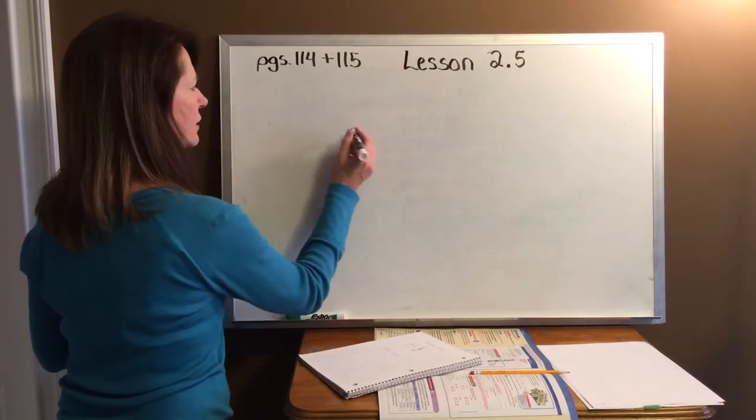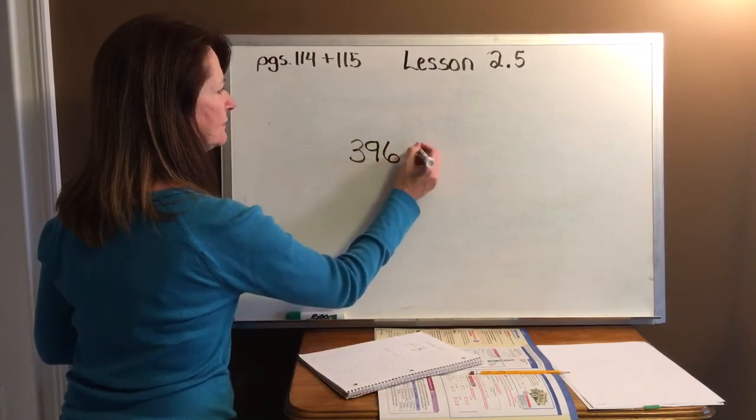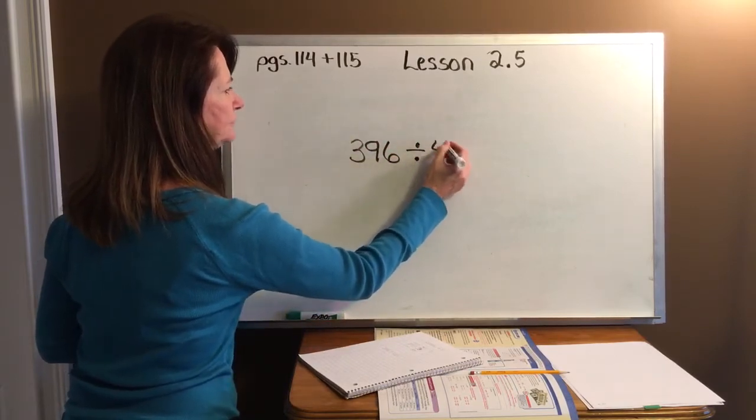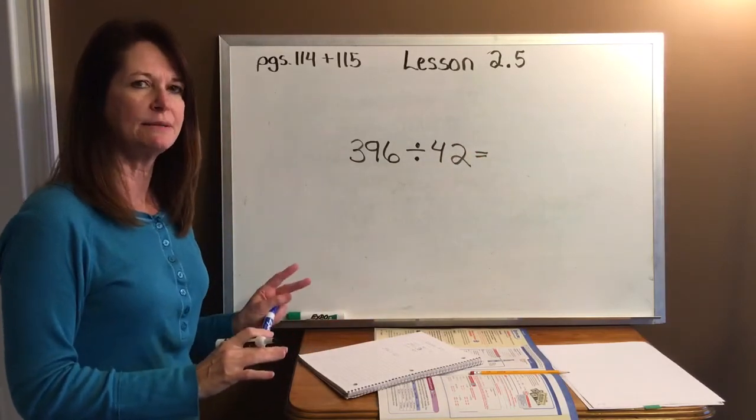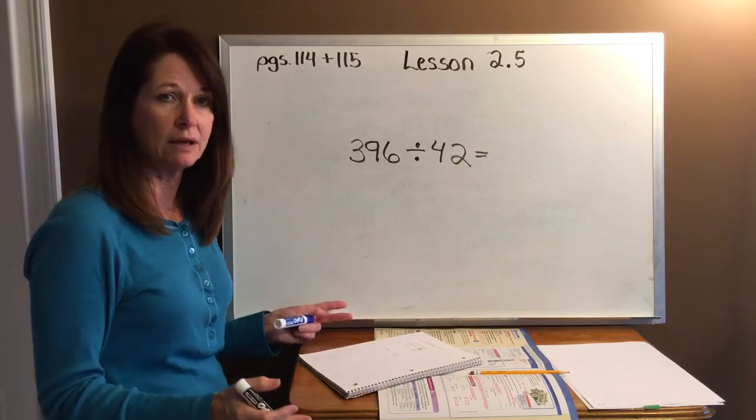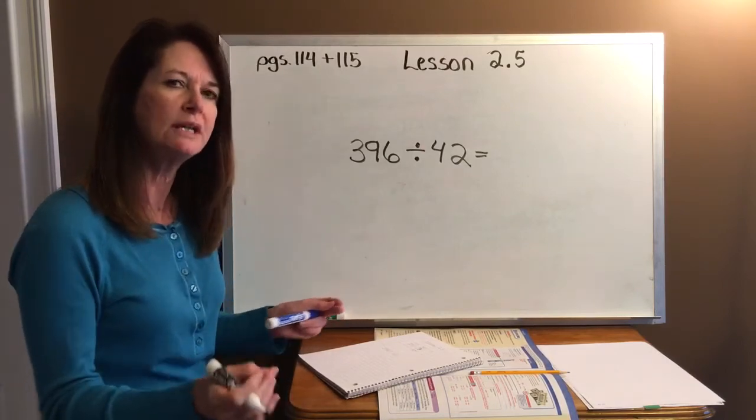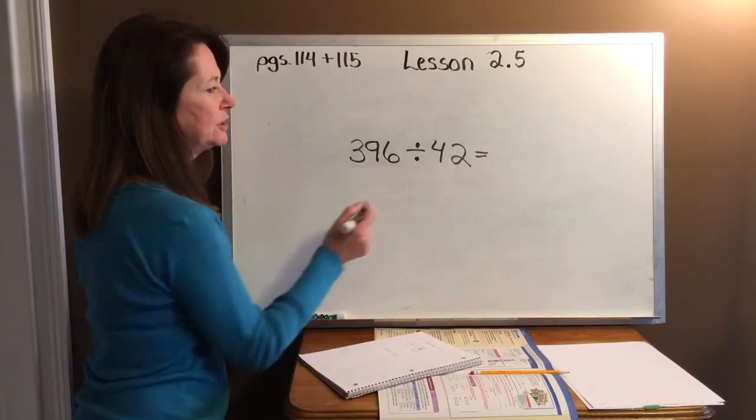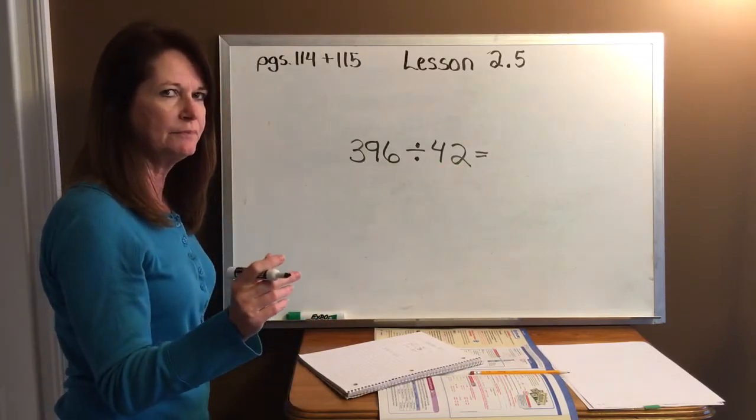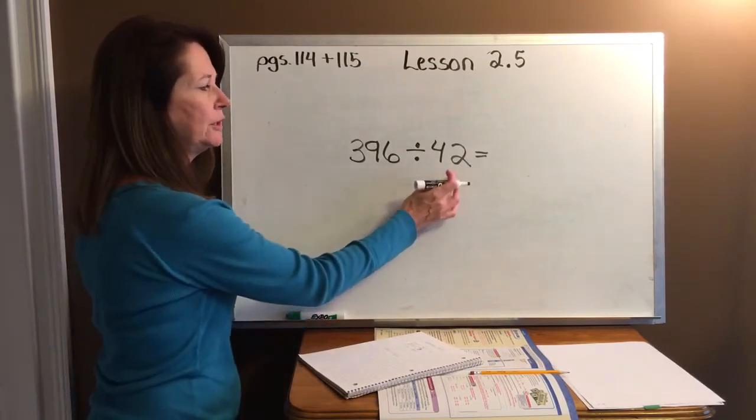All right. Let's do this next problem. We're going to do 396 divided by 42. So we're wanting to estimate using what we call compatible numbers. That means fast facts, numbers that work together in the same family.